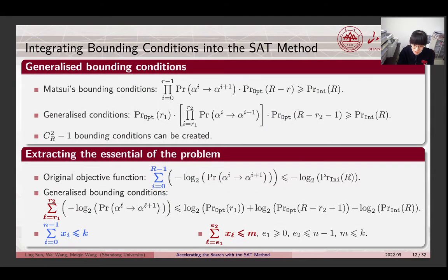For a convenience discussion, the original objective function of the SAT problem can be abstracted in this form. In parallel, the generalized bounding condition can be converted into this form. Therefore, the essential of the problem should be how to simultaneously describe these two cardinality constraints.